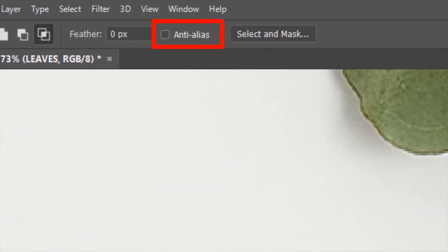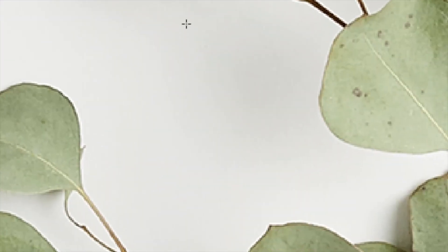Next is anti-alias. But what is alias? Think of alias as rough distorted edges. So that makes anti-alias plain or smooth edges. So with the anti-alias unchecked, if we make a selection, the edges will be rough. To preview that, press Q.